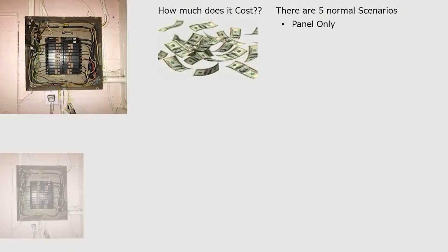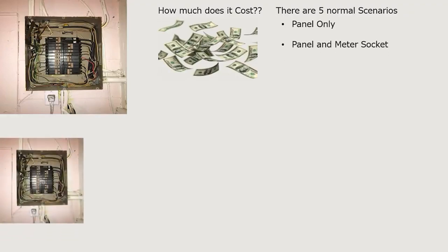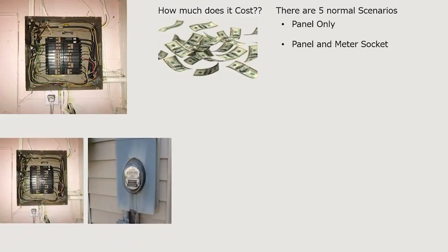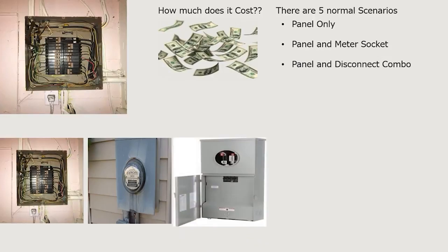Situation one is the panel only — we come into your home and change the panel only. Number two, we change the panel and the meter socket. When I talk about meter socket, I'm not talking about the little glass part your utility company owns — I'm talking about the outside actual meter box. Sometimes we have to put a panel meter disconnect combo, which has a place for the meter and a breaker right underneath it where your main house disconnect is.